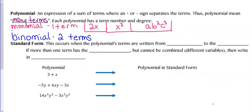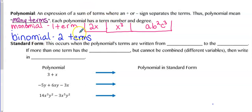A polynomial is an expression that is the sum of terms where a plus or minus sign separates the terms. It means many terms or many names. Each polynomial has a term number and a degree. If we call something a monomial, that means it has one term. Examples like 2X, X cubed, and AB squared are all monomials because there are no plus or minus signs between them.